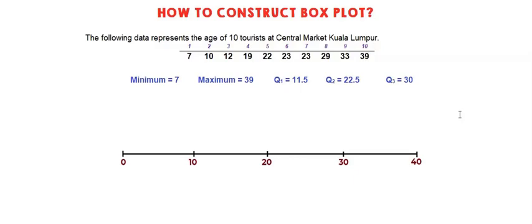What is a quantitative variable? A variable that is measured based on a numerical scale. For example, here we have data about the age of 10 tourists at Central Market, Kuala Lumpur.